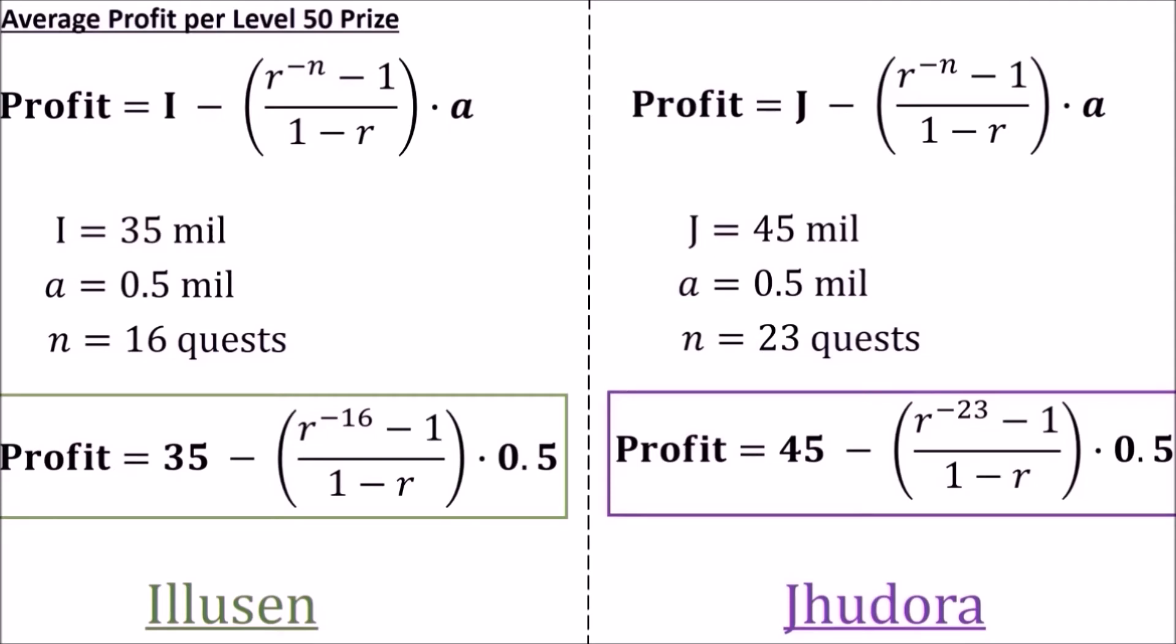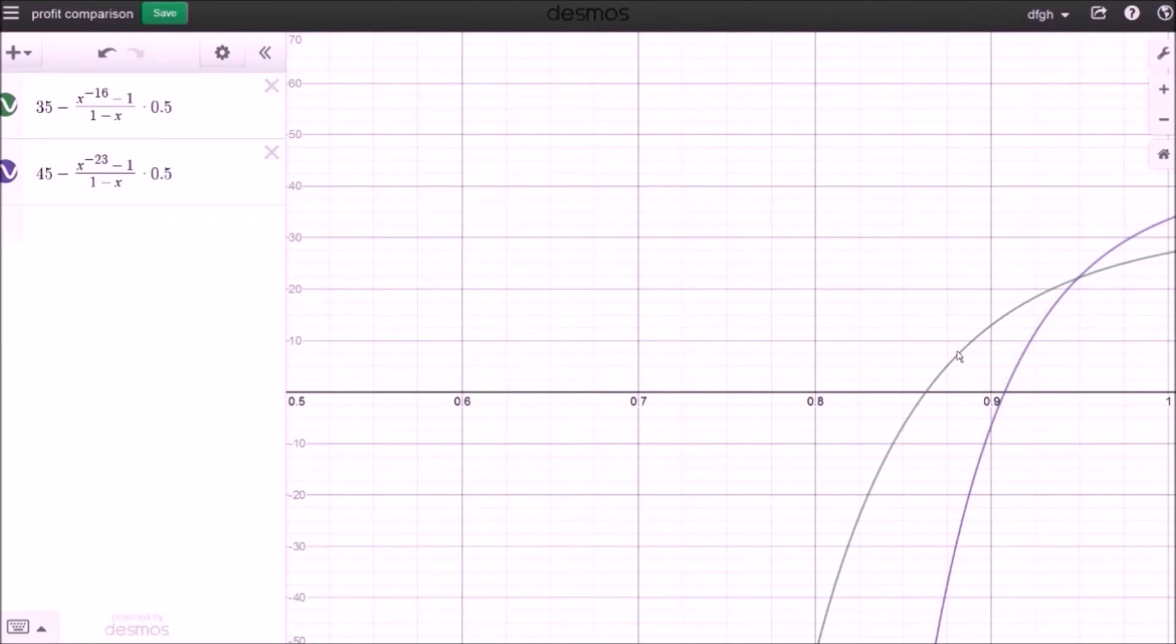We can graph these two equations to see how our average profit for each fairy changes as our rarity 99 collection grows. The green line represents Illusion's quests, and the purple represents Judora's. The x-axis represents the completeness of your collection, and the y-axis represents your average profit on each level 50 prize. The x-intercepts show the cutoff for profitability. You can begin expecting a profit from Illusion when your collection is 86% complete, and a profit from Judora at 90% complete. At 95%, the profit margin is equal for both quests, and after that, Judora's become more profitable.